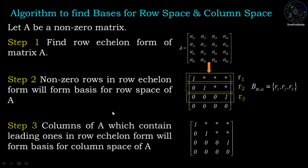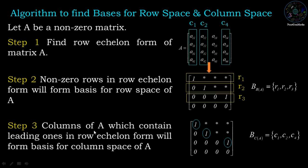Step 3: columns of A which contain leading ones in row echelon form will form a basis for the column space of A. We identify leading ones in row echelon form, which are contained in column 1, column 2, and column 4. So the corresponding columns of A — C1, C2, and C4 — will form a basis for the column space of A. Therefore, the column space bases contain only original values of columns of A.